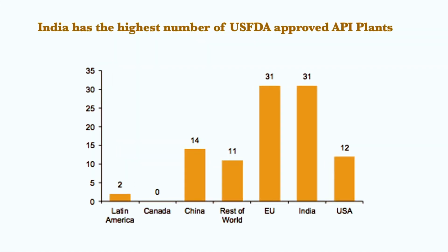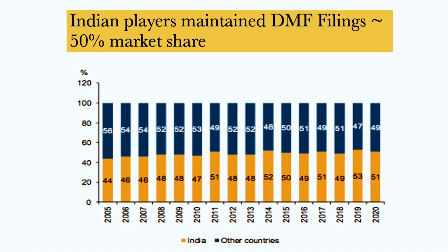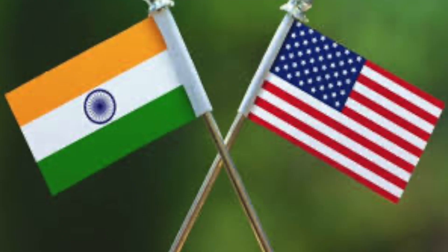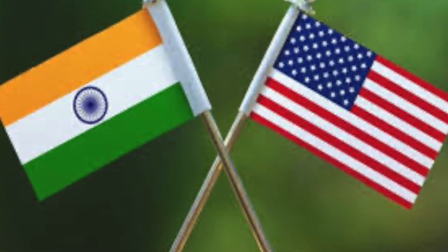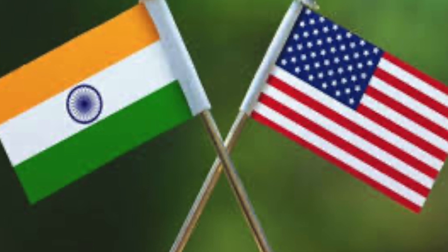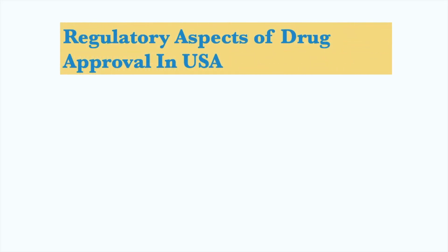If we talk about API plants, USFDA-approved API plants in India are more than any other country. Indian players maintain DMF filings with more than 50% market share. If we look at the list over the last 15 years, India's market share is shown in yellow, which is roughly around 50% — meaning every second DMF filing is being done from India. This indicates that India and US fortunes are deeply intertwined in pharmaceuticals. So we cannot analyze India's pharmaceutical industry without understanding the US. Let's move to the regulatory aspect of drug approval in the US.